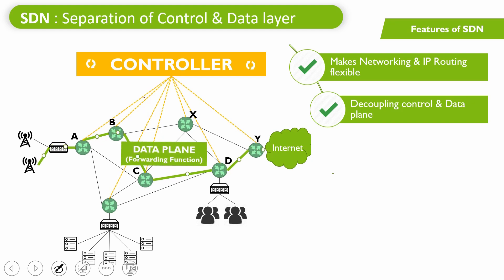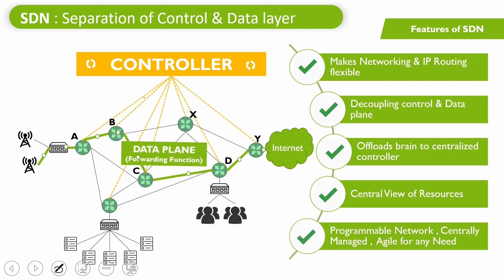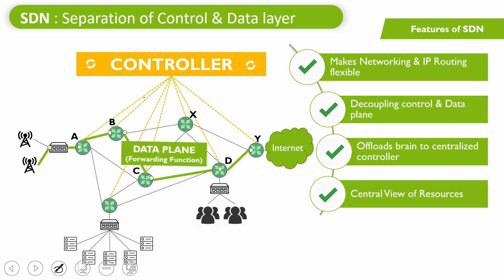This is called decoupling of control and data plane — they are totally separated. The third key principle is offloading the brain to a centralized controller with a central view of resources. SDN provides centralized monitoring of the entire network. The control plane considers end-to-end topology and end-to-end network health when routing traffic. For example, if there is an outage, congestion, or degradation with router D, it will route traffic via router X instead — that is the beauty of SDN.